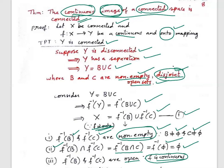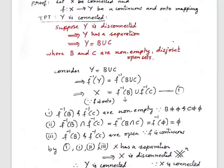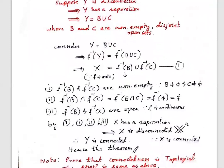By equation 1 and points 1, 2, 3, we have x as the union of two non-empty, disjoint, open sets. That means x has a separation — x is disconnected. But x is given to be connected. Therefore, this is a contradiction. We got this contradiction because we assumed y is not connected. Therefore, y has to be connected. Hence, the theorem is proved. We will take up one more theorem in the next session.